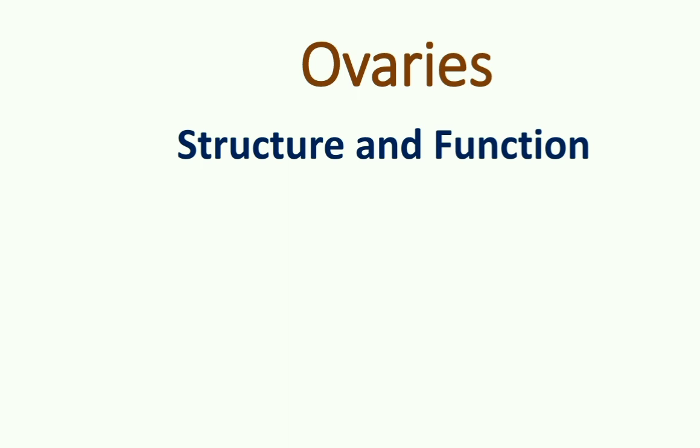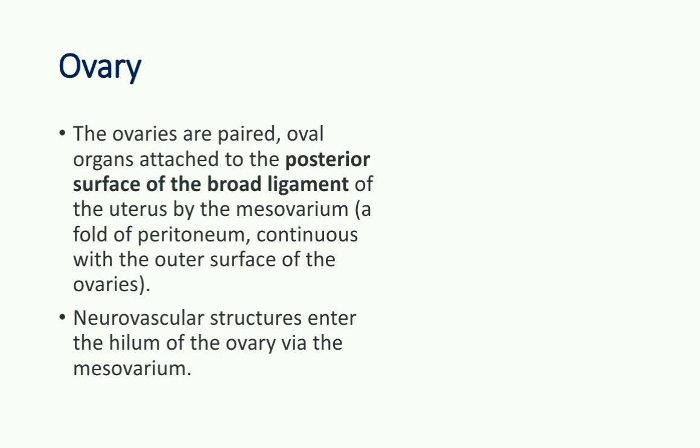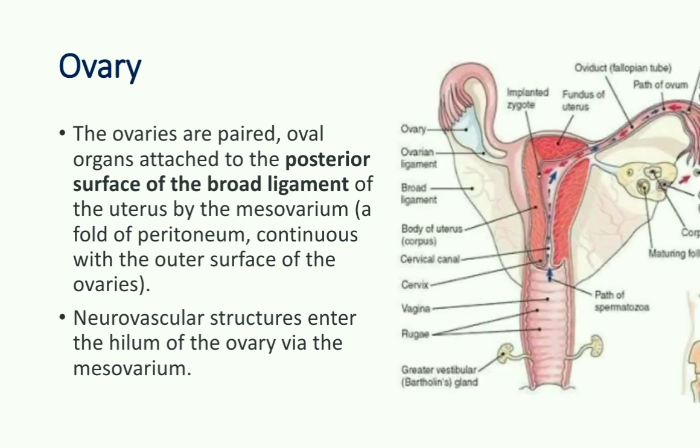Good morning students. Today we will discuss ovarian hormones, but before going further we will take a quick revision of ovarian structure. Ovaries are paired organs, oval in shape, attached to the posterior surface of the broad ligament of the uterus by the meso-ovarian. The meso-ovarian is a fold of peritoneum which is continuous with the outer surface of the ovary.